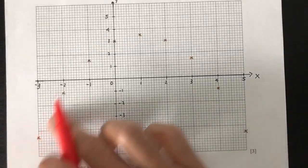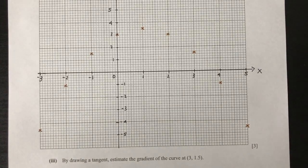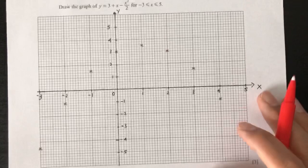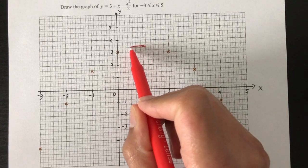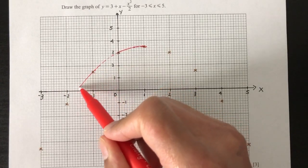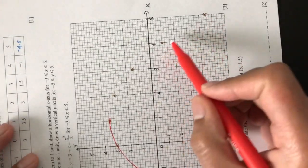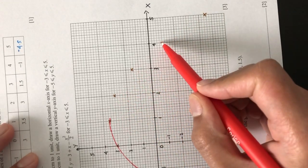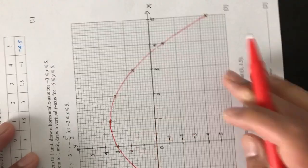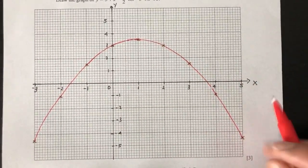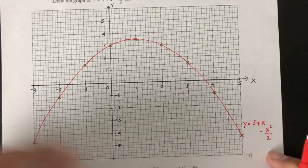It is really important that we join all the points together with a smooth curve, because your follow-up questions will involve tangents and other work that depends on your curve being a good curve. So make sure you try your best to make this a smooth curve. And always label the curve as y equals 3 plus x minus x squared over 2.